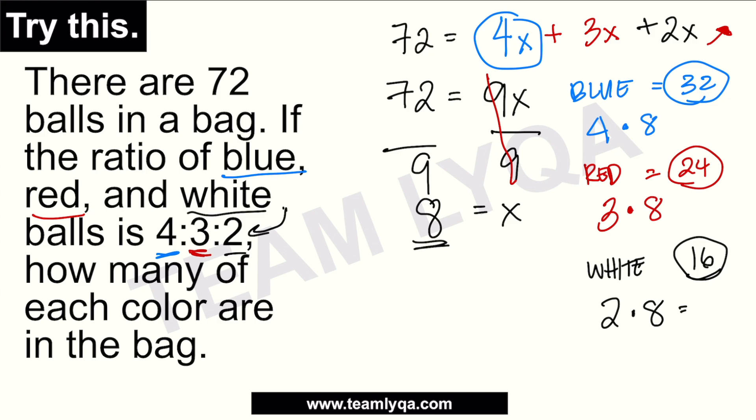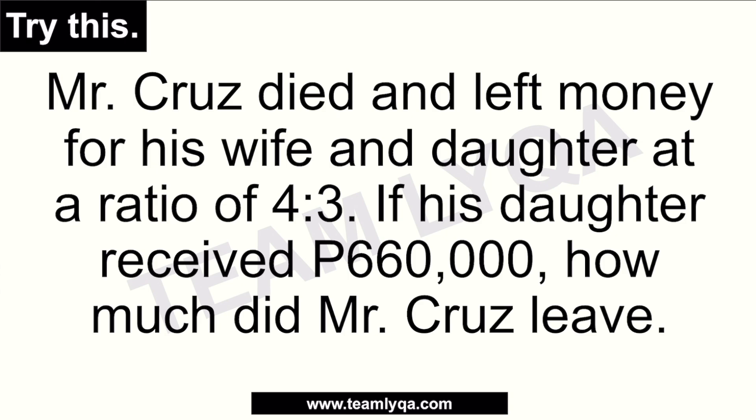Alright, now there's another type of question na mas mahirap pagdating sa ganitong klaseng tanong — problems where the given is a part of the proportion, but what's being asked is the total. The problem reads: Mr. Cruz died and left money for his wife and daughter at a ratio of 4 is to 3. If his daughter received 660,000 pesos, how much did Mr. Cruz leave? You can expect this type in aptitude exams, college entrance tests, civil service exams, NAPOLCOM, PHILSAT, and similar tests.